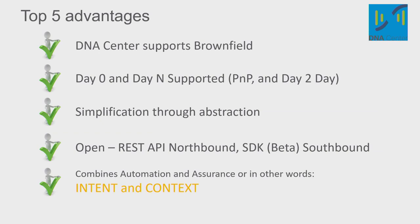Simplification through abstraction — that's what all our customers are asking for: I've got a super complex network, I need to hire more people, I can't find them, how do I simplify this? Everything is open — open APIs, SDKs. Can I take my ticketing system so that when I see an issue on my network it automatically creates a ticket, goes right into my SOC, and now he has a link to click on? We're taking the context happening on the network and giving you recommendations on how to fix it. Then taking automation and assurance — taking the intent of what's happening in your business and applying it to your network, and taking the context out of your network and applying that back to your business.